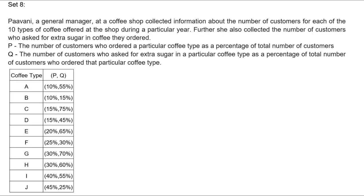Pavani, a general manager at a coffee shop, collected information about the number of customers for each of the 10 types of coffee ordered at the shop during that particular year. She also collected the number of customers who asked for extra sugar in the coffee they ordered. P represents the number of customers who ordered a particular coffee type as a percentage of total number of customers, whereas Q represents the number of customers who asked for extra sugar in a particular type of coffee as a percentage of total number of customers who ordered that particular type of coffee. This table is given.